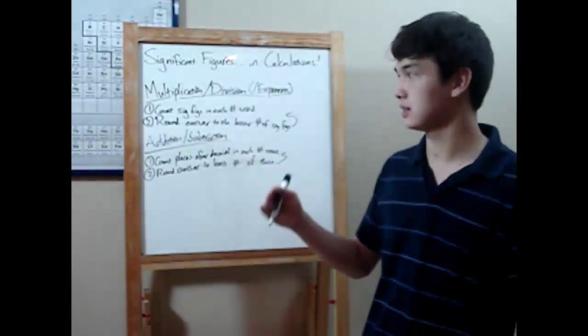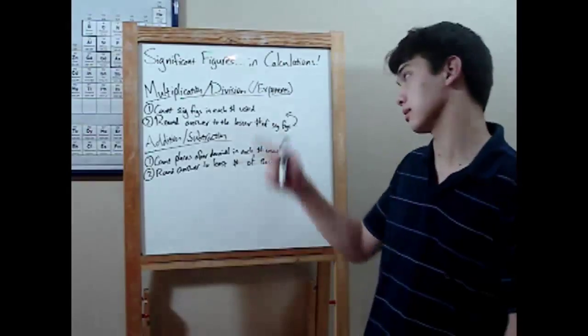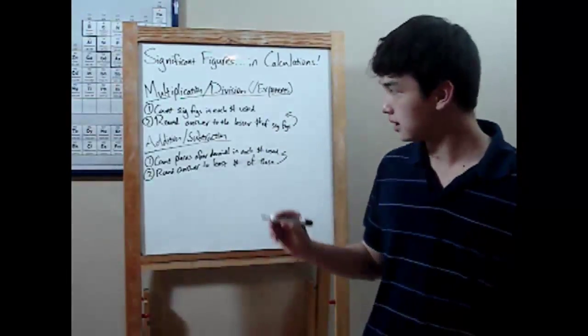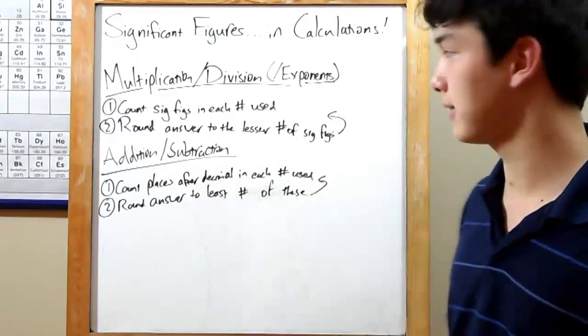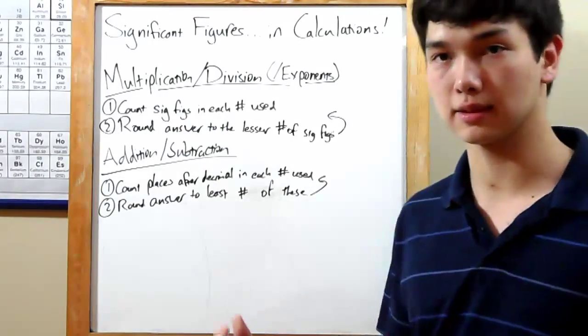Whenever you do a multiplication or division, or raise something to a power—remember, that's really just multiplication—you need to keep in mind this rule. Count the number of significant figures in each of the numbers you're multiplying or dividing by, and then round the answer to the lesser of those two.